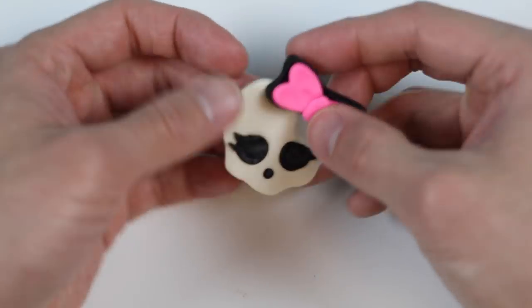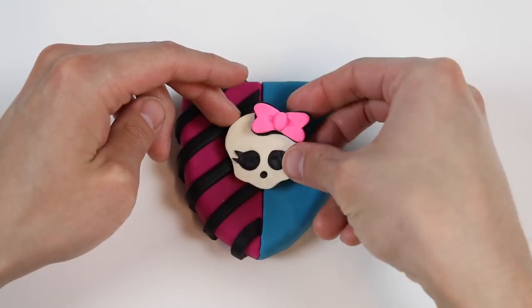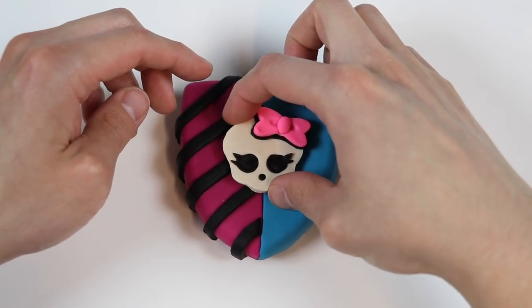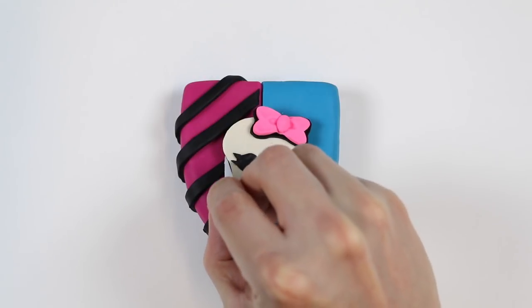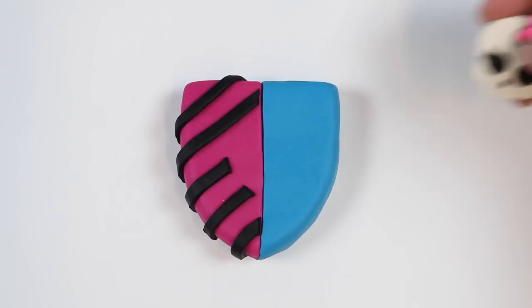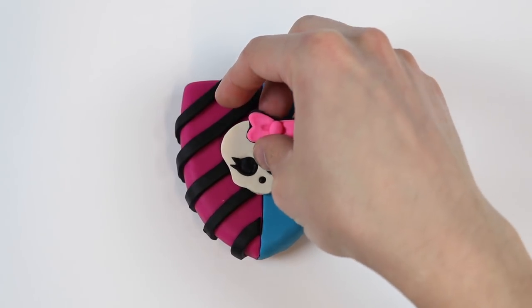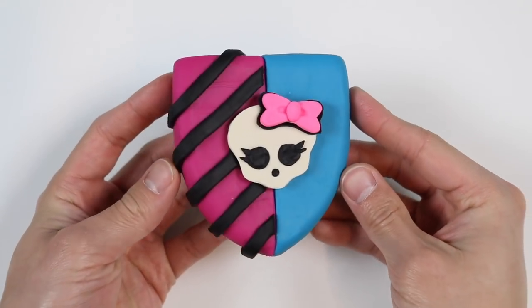And check it out, it looks pretty close to the ghoul on the Monster High logo. Let's attach this onto the middle of the popsicle. Wait one second, let me fix something. Those black diagonal lines were in the way. There we go, and here's our Monster High popsicle.